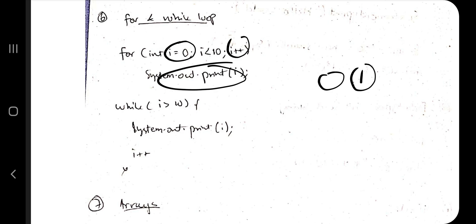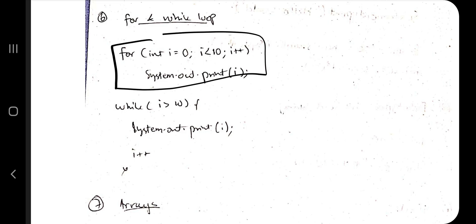So what happens: first i is 0, then 0 will be printed, then it will be i plus plus - 1 is there, then 1 will be printed, then 2, then 3. Till when it will be printed? It will be printed until i is less than 10. So what are the numbers printed? 0 till 9. This is the syntax for for loop.